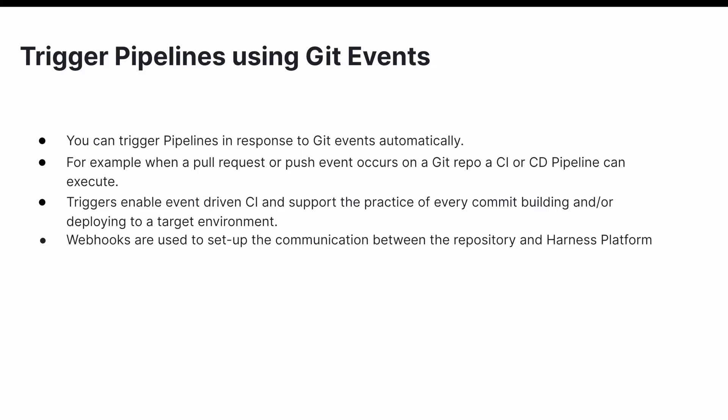For all Git providers supported by Harness, the webhook is created in the repository automatically — you don't need to copy it and edit your repository webhooks. But in case you want to test it manually, that is also possible: just find the copy link in the created triggers section, copy the trigger webhook, and paste it in your webhook section in the repository.